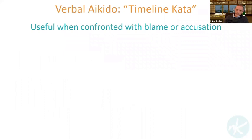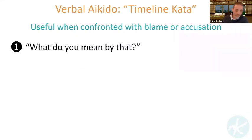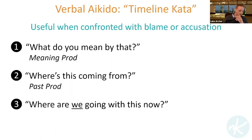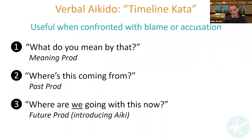We looked at that a little bit last week. This week I'm going to share a further one — it's called a timeline kata. It's really nice when you're confronted with accusation or blame, but can work in other cases too. This will sound very similar to what you did last week in stretching. The three questions you asked in stretching were: 'What does this word mean for you?' — called a meaning prod; 'Where is this coming from?' — a past prod; and 'Where are we going with this now?' — a future prod, with a little bit of ike blended in.